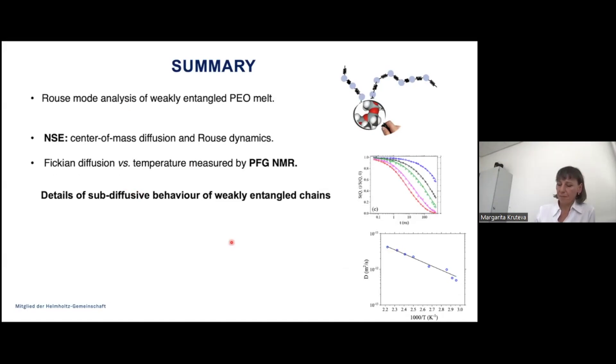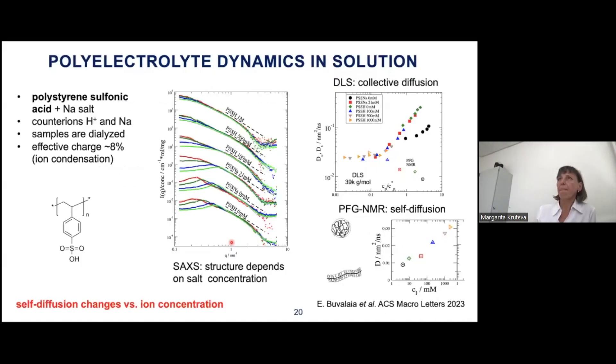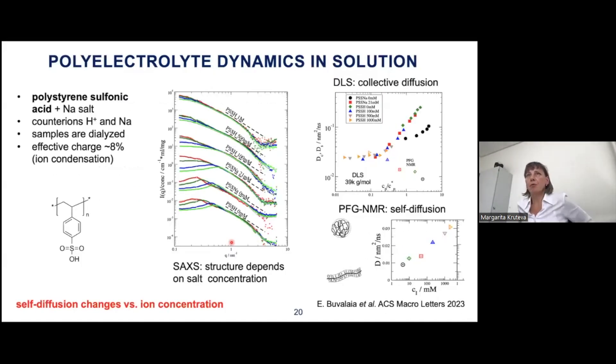For the weakly entangled chains, we were able to get the crossover from sub-diffusion to Fickian diffusion. Using the diffusion coefficient measured with PFG NMR, we obtained details of this crossover — the time and the distance where it happens. The crossover distance is approximately equal to the tube diameter confinement length, and the crossover times are much larger than the maximum Rouse relaxation time (terminal time) of the polymer chain. In conclusion, PFG NMR is quite effective for polymer melts: we measured self-diffusion as a function of temperature, related it to center-of-mass diffusion and Rouse dynamics obtained by NSE, and derived details of subdiffusion behavior of weakly entangled chains.